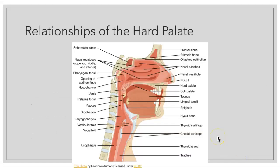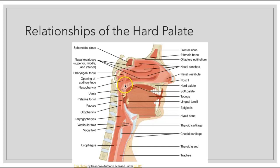The posterior one third of the hard palate is made up of the palatine bone found posteriorly. So we have the maxilla bone in front, then the palatine bone in the back, then our soft palate, which then transitions into the uvula — that ball hanging in the back of your throat.